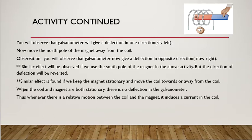When the coil and magnet are both stationary, if we keep them totally stationary without moving in any direction, there will be no deflection in the galvanometer. No deflection means no current. Whenever there is relative motion or movement between the coil and the magnet, it induces a current in the coil.